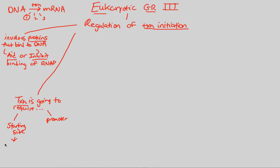The starting site is the place — the specific base pair — where transcription really starts. Transcription doesn't just start wherever RNA polymerase lands; the RNA polymerase lands at the promoter and finds the specific base pair that signals the start of transcription — that's our starting site. The promoter is a sequence of bases, usually predictable with great accuracy, where RNA polymerase binds. It will travel down this promoter region until it finds the starting site and then begin transcription.